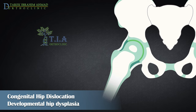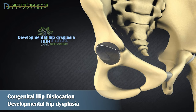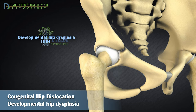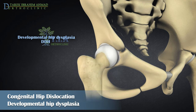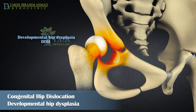Acetabulum and femoral head development are intimately related. The normal concavity of the acetabulum develops in response to the presence of a concentric femoral head. Developmental dysplasia of the hip affects the immature hip of the infant and consists in abnormal development of the hip joint, resulting in an incongruent relationship of the femoral head to the acetabulum. In simpler terms, DDH is a condition where the ball part of the thigh bone doesn't sit in the socket properly, leading to a shallow hip socket.